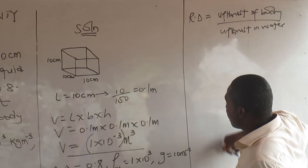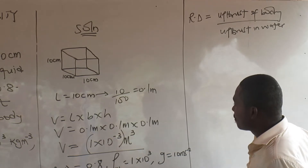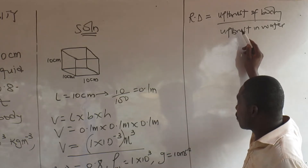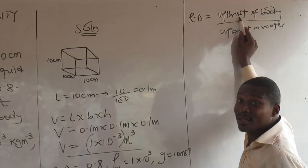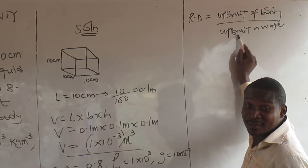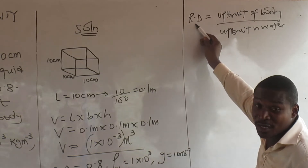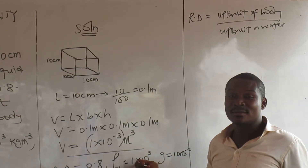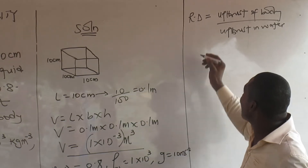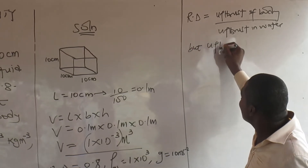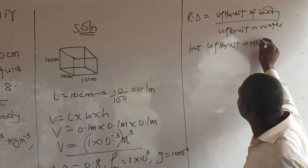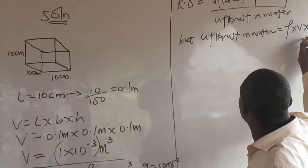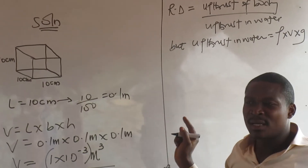We have the density of water and we are looking for the upthrust of a body — how to find the upthrust in this water. The value of relative density is known, but it does not point to the upthrust in water directly. We don't know it, so we cannot consider it as the density of water. We have to go and look for the upthrust in water, which is given by density times volume times gravity.